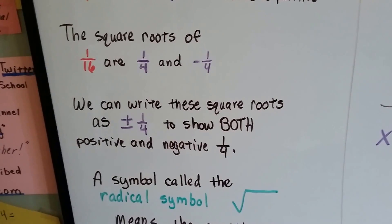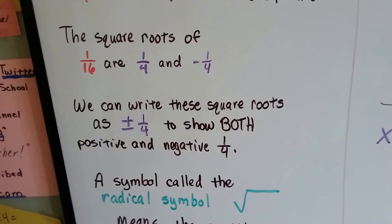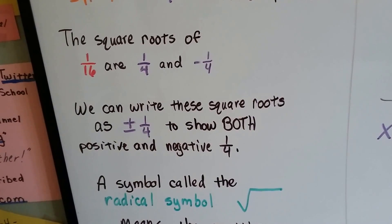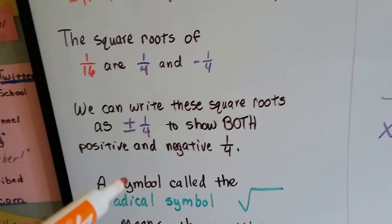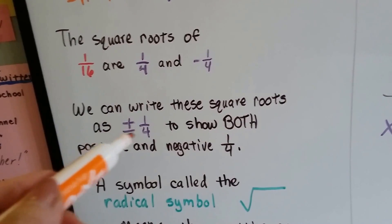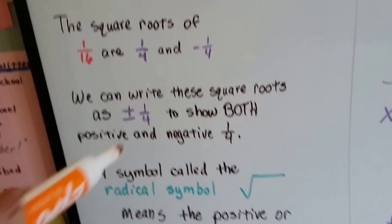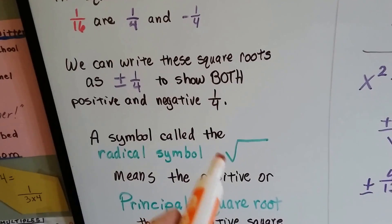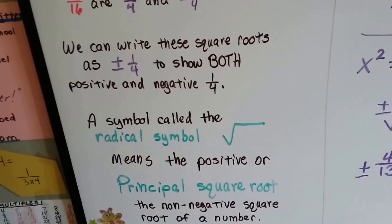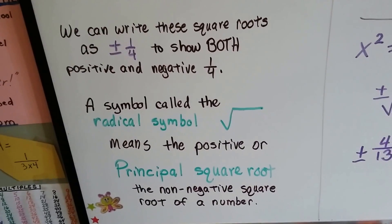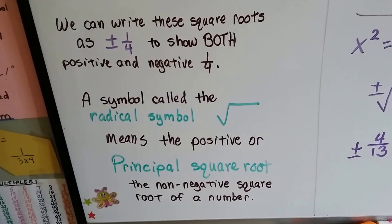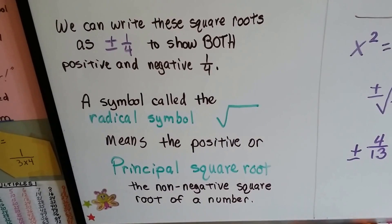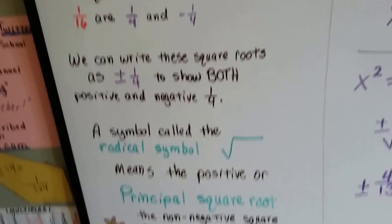Square roots can be written as plus or minus — for example, ±4 — to show both positive and negative values. We write the little plus on top of the minus sign like that. This symbol is called a radical symbol. It means the positive or principal square root; it's the non-negative square root of a number. It's positive.